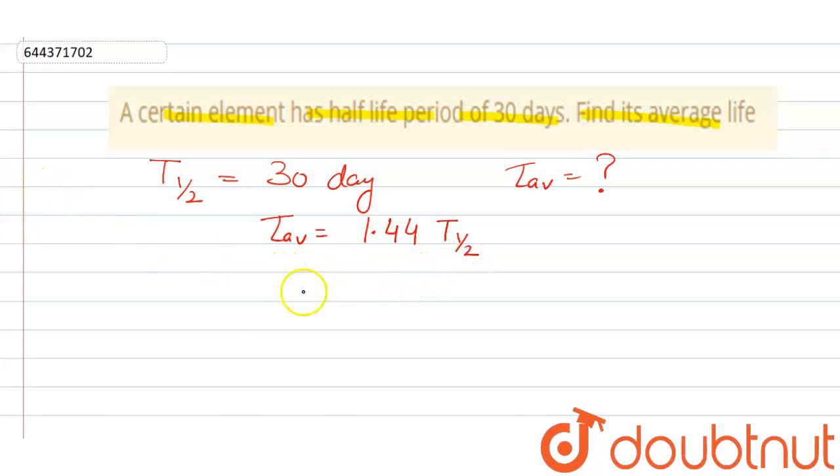If we put the value here, we get average life equals to 1.44 into 30. So that means average life is...